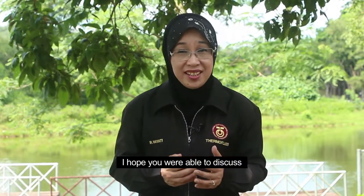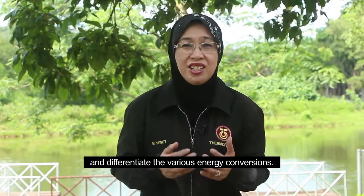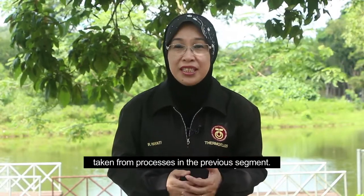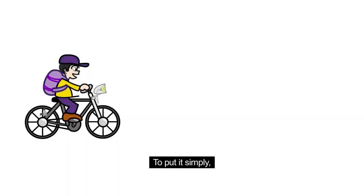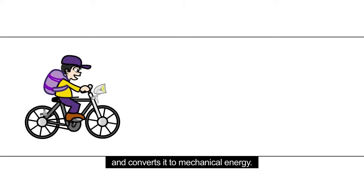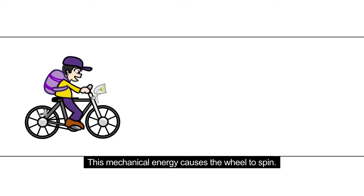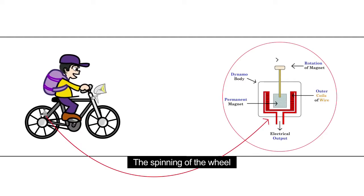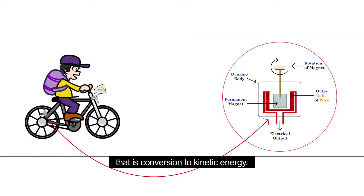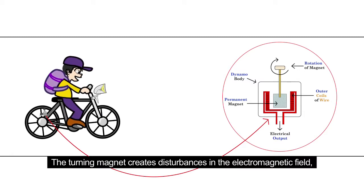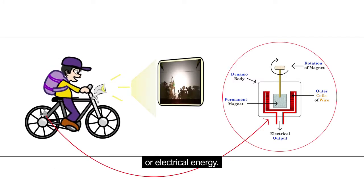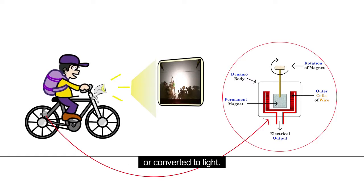I hope you were able to discuss and differentiate the various energy conversions. Let us look closer at the animation. To put it simply, the boy uses biochemical energy in his body when cycling the bicycle and converts it to mechanical energy. This mechanical energy causes the wheel to spin. The spinning of the wheel provides for the rotation of a magnet in the dynamo, converting it to kinetic energy. The turning magnet creates disturbances in the electromagnetic field, which produces alternating current — electrical energy. That electricity is then converted to light.